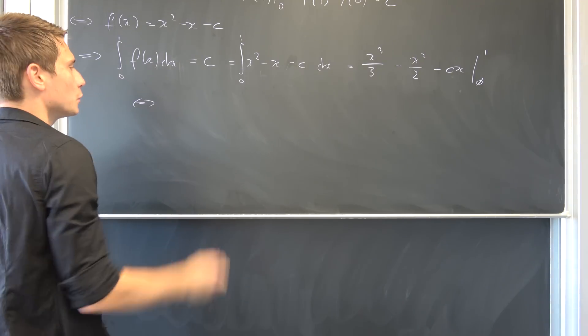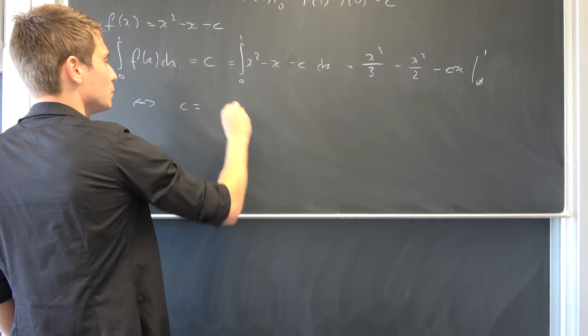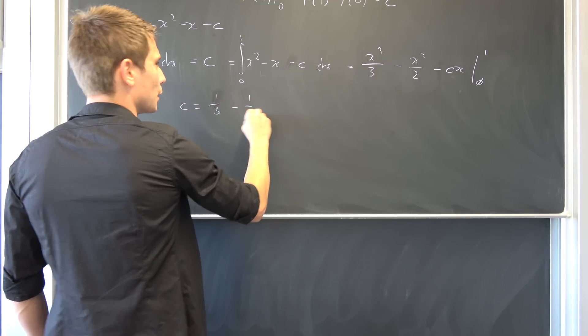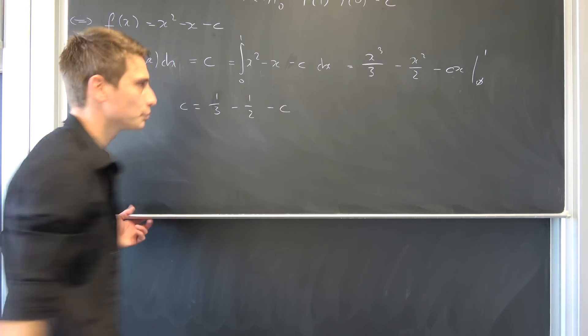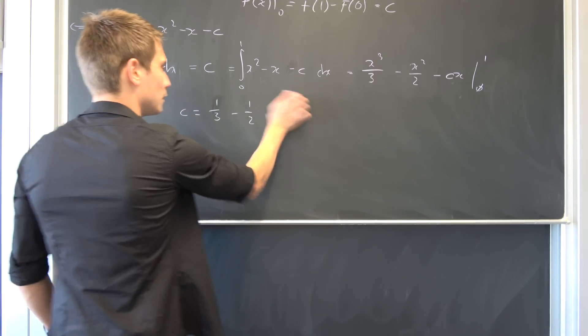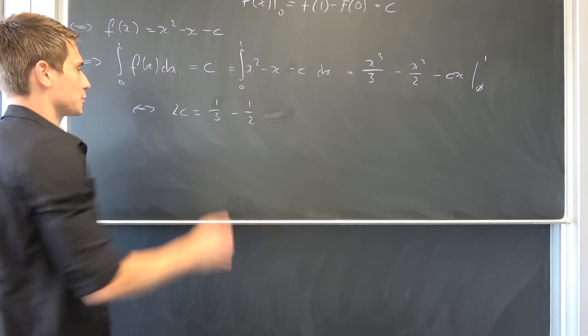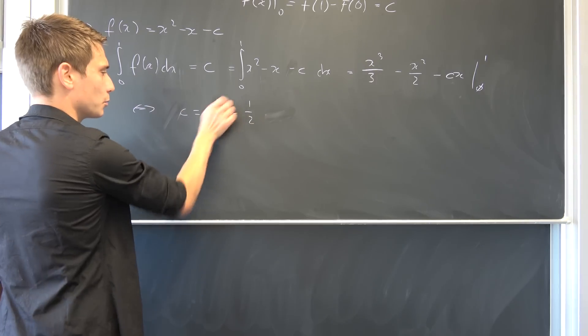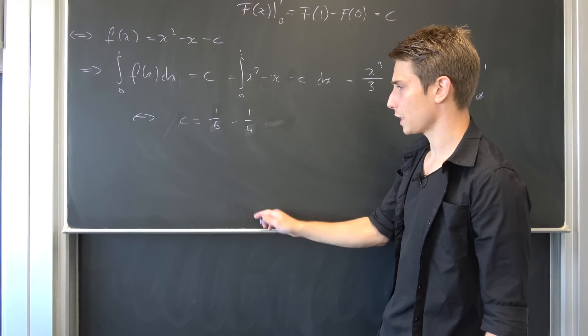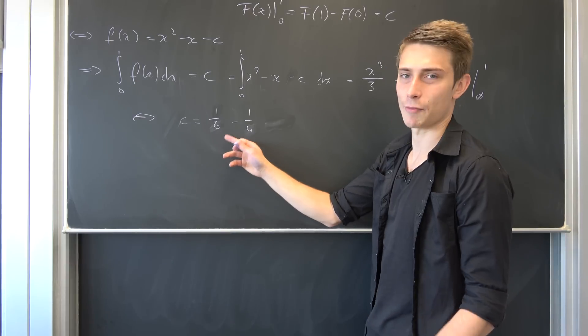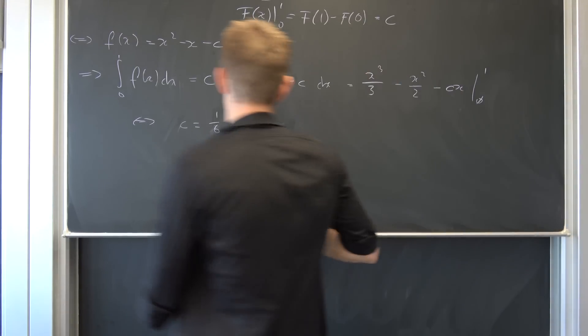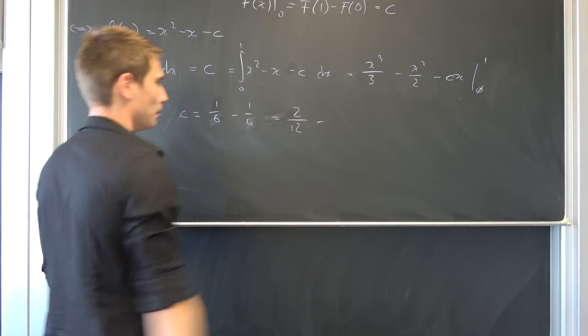So x to the third power over three minus x squared over two minus c times x from zero to one. The zero term is going to vanish completely. In the end, we are going to be left with c being equal to one third minus one half and then negative c. Basically now we can add c on both sides, so two times c and divide both sides by two. So we end up with one sixth and one fourth.